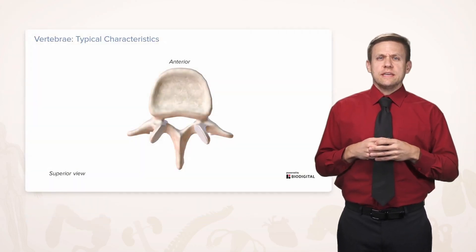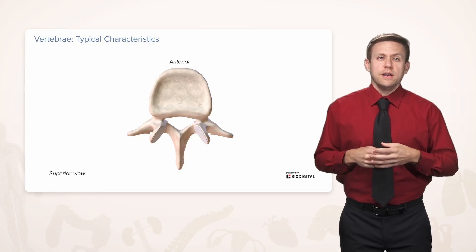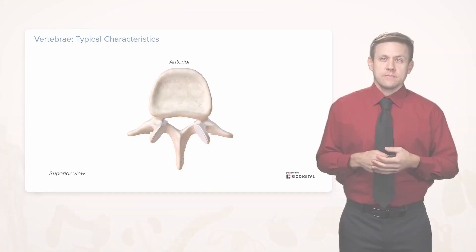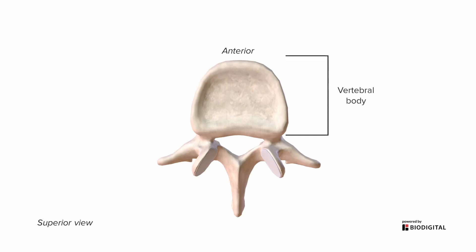That's the vertebral column as a whole. Let's look at the individual vertebra that makes up the vertebral column. Here's a superior view looking down on a typical vertebra. You can see anteriorly it's one big flat disc called the vertebral body, but posteriorly it's a lot more complicated, and that part we call the vertebral arch.